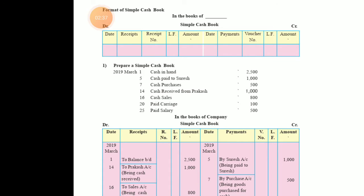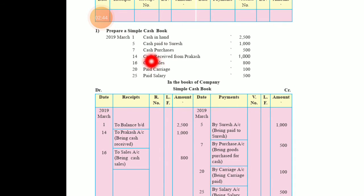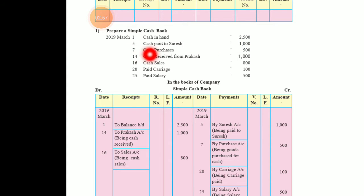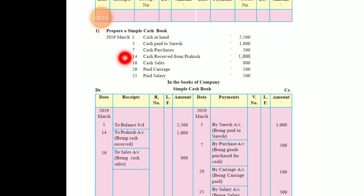This is the format of a simple cash book. Now let's see how the cash book is prepared. The transactions are: March 1 — cash in hand 2500; March 5 — cash paid to Suresh 1000; March 7 — cash purchase 500; March 14 — cash received from Prakash 1000; March 16 — cash sales 800; March 20 — paid carriage 100; March 25 — paid salary 500. All transactions are in cash.